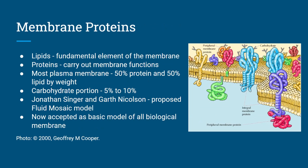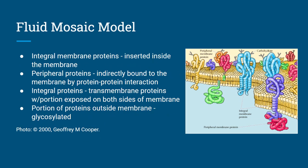Now let's look at membrane proteins. The plasma membrane is made up of both lipids and proteins as well as cholesterol moieties, and proteins carry out membrane functions. Most of the plasma membrane is composed of 50% protein and 50% lipid by weight, and carbohydrate accounts for about 5–10%. Two scientists, Jonathan Singer and Garth Nicholson, proposed the fluid mosaic model of the plasma membrane in 1972, now accepted as the basic model for all biological membranes. According to this model, there are integral membrane proteins and peripheral proteins. Integral proteins are embedded inside the membrane, while peripheral proteins are indirectly bound to the membrane by protein–protein interactions.